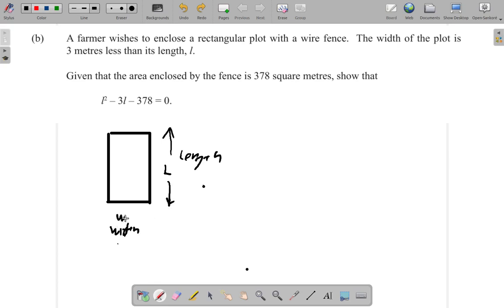The width is 3 meters less. So the width is 3 meters less than its length. If its length was 10, the width would be 7, which is 10 minus 3. If the length was 20, the width would be 20 minus 3, which is 17 and so on. So the width is L minus 3. Let's call this width L minus 3, from here to here.